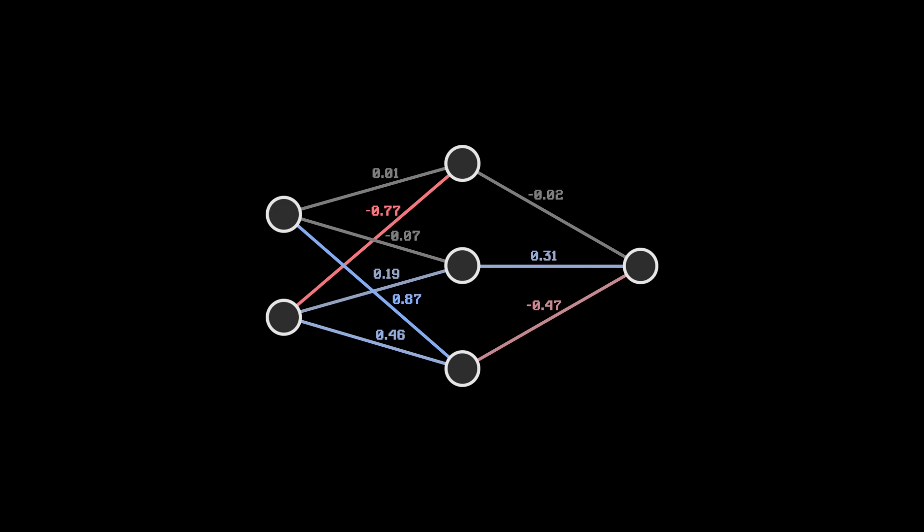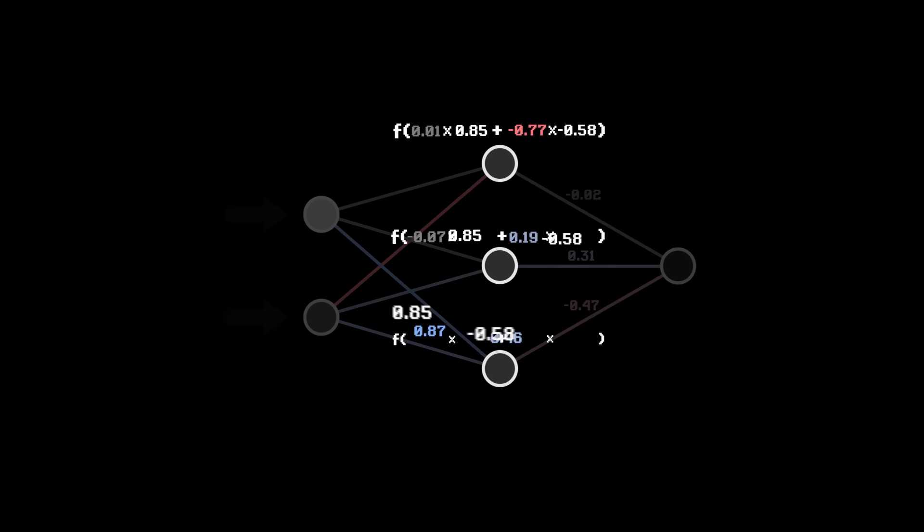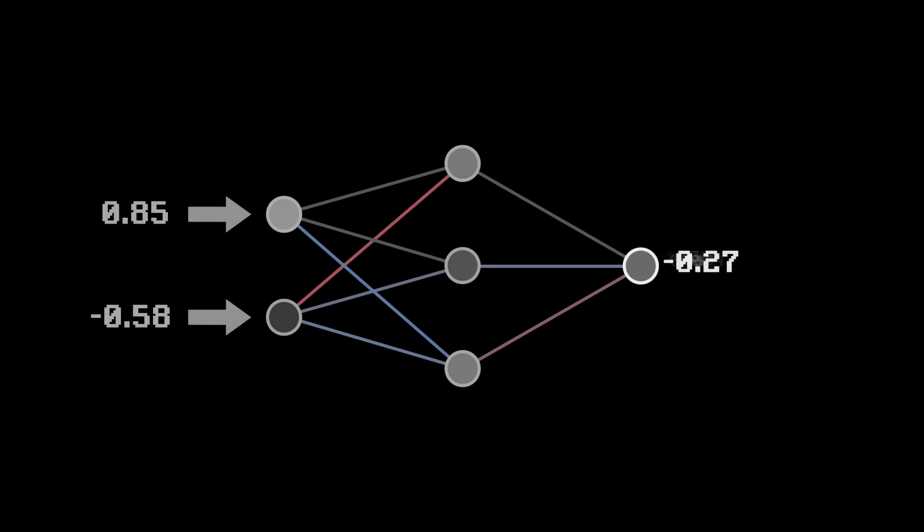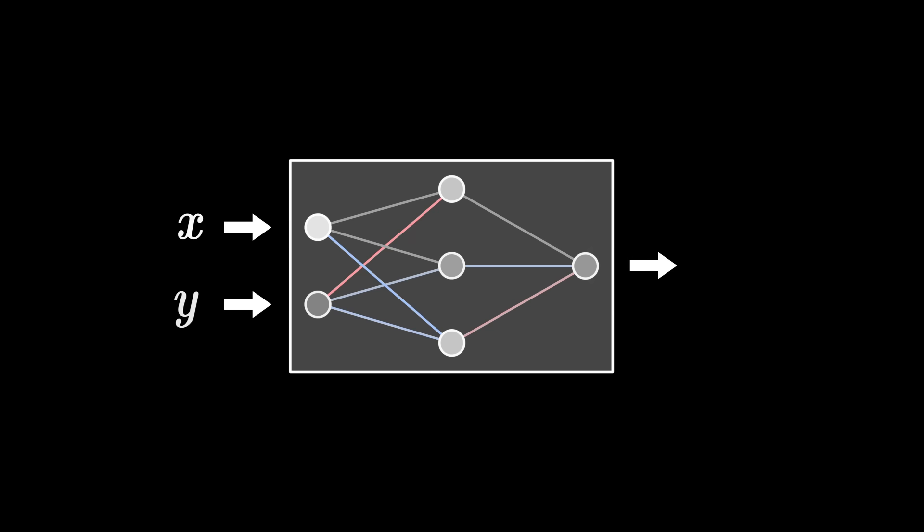Let's look at this neural network. It takes two input values, transforms them, and produces an output. Overall, the network acts as a mathematical function, taking two inputs and returning an output.